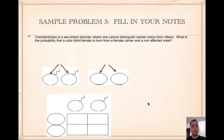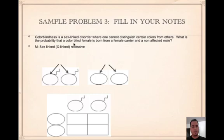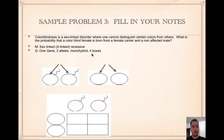Sample three. Colorblindness is a sex-linked disorder where one cannot distinguish certain colors from others. What is the probability that a colorblind female is born from a female carrier and a non-affected male? This time they tell us right away it's a sex-linked disorder — so it's sex-linked and recessive, because colorblindness and most sex-linked disorders are recessive. It's one gene, two alleles, monohybrid, four boxes. Big C is healthy; little c is colorblind because colorblindness is recessive.